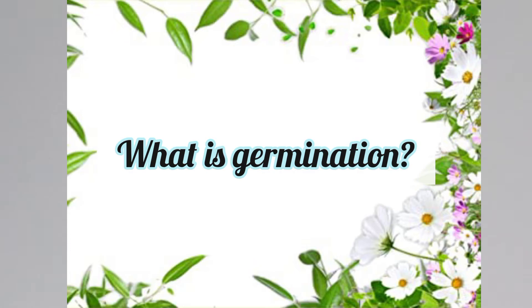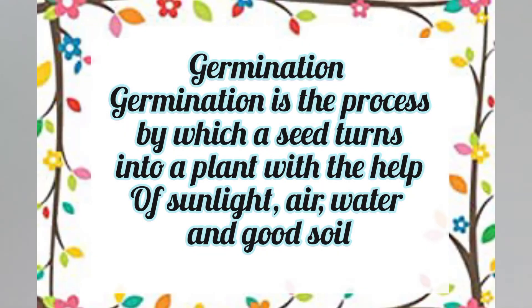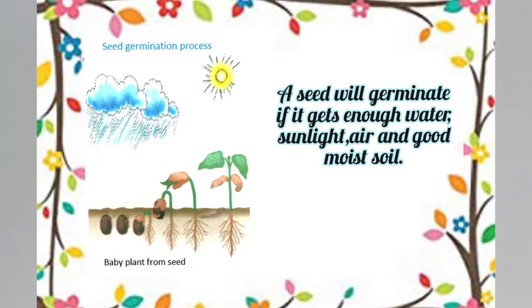So now we will learn what is germination. Germination is a process by which a seed turns into a plant with the help of sunlight, air, good soil, and water. Our seed will germinate if it gets enough water, sunlight, air, and good moist soil.